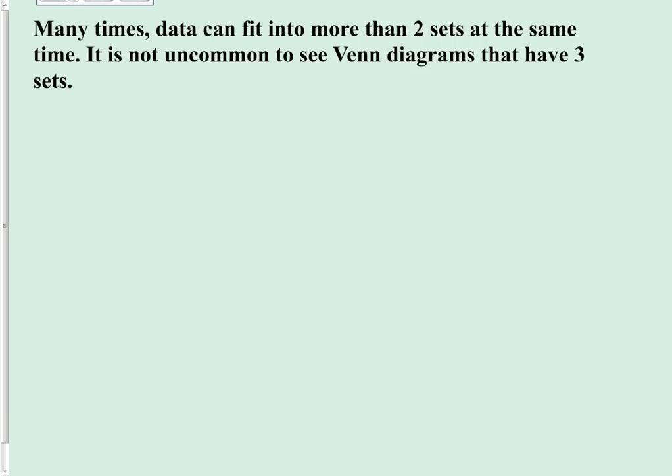So it is not uncommon to see Venn diagrams that have three sets. And actually, Venn diagrams can grow into even larger sets, four sets, five sets, and so on. But those become extremely complicated to try to read. We won't be looking that deeply into it. Three sets will be as large as we will be looking.